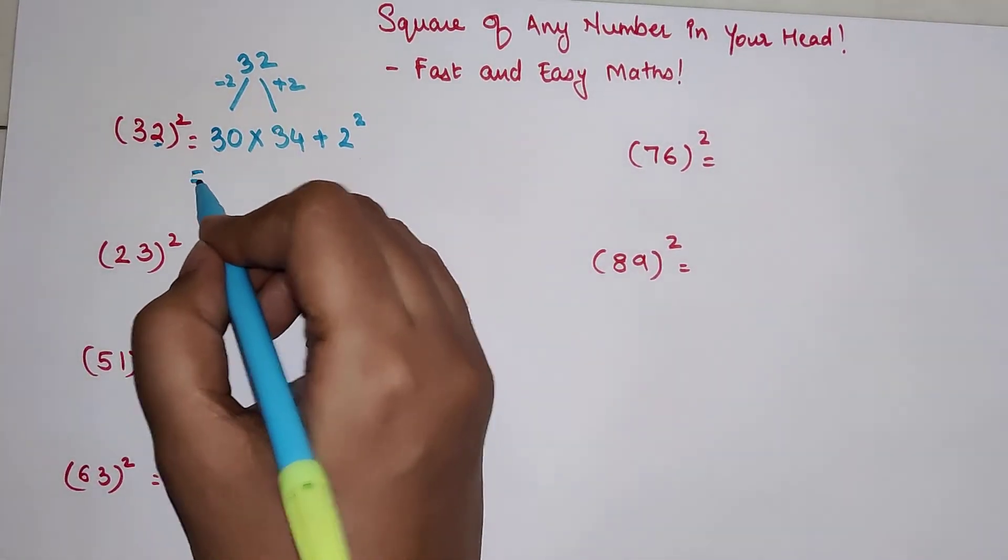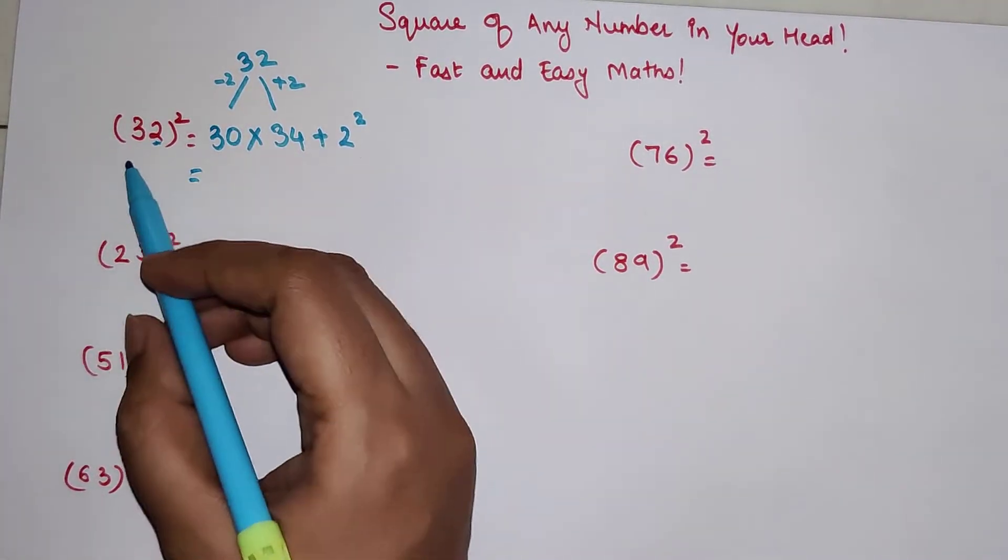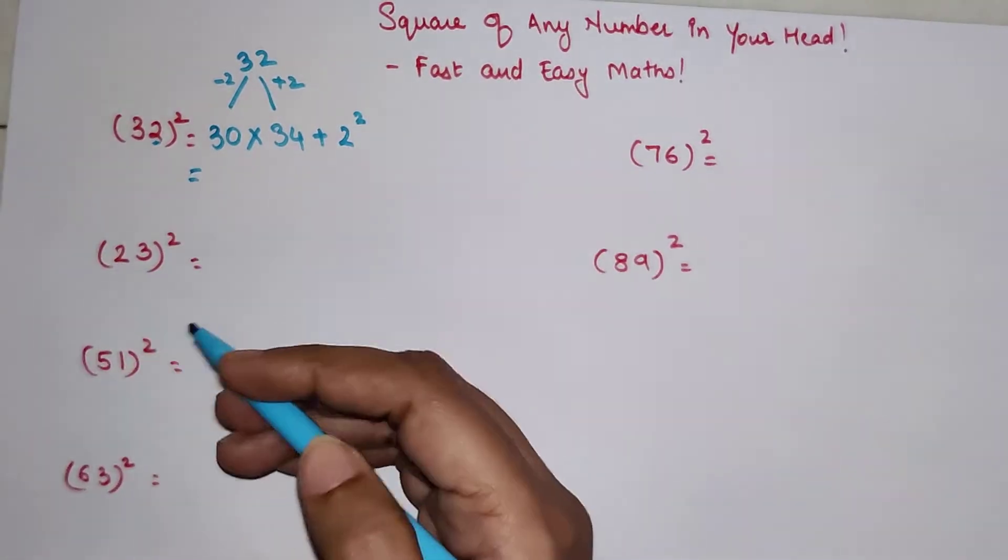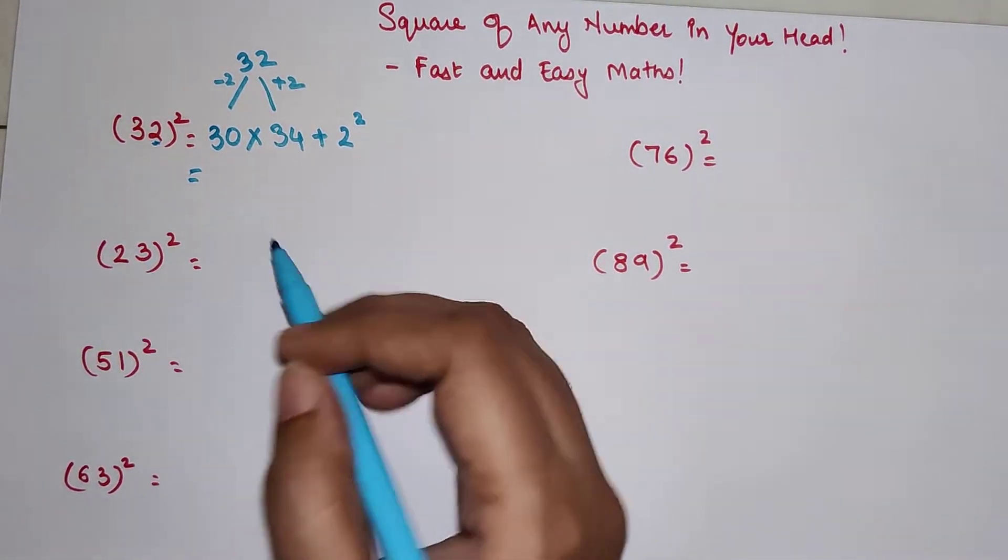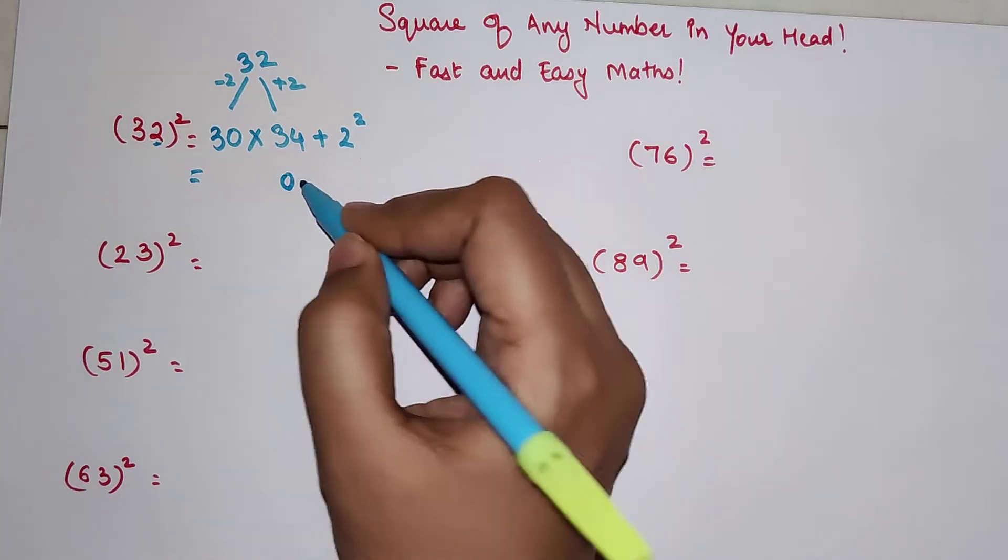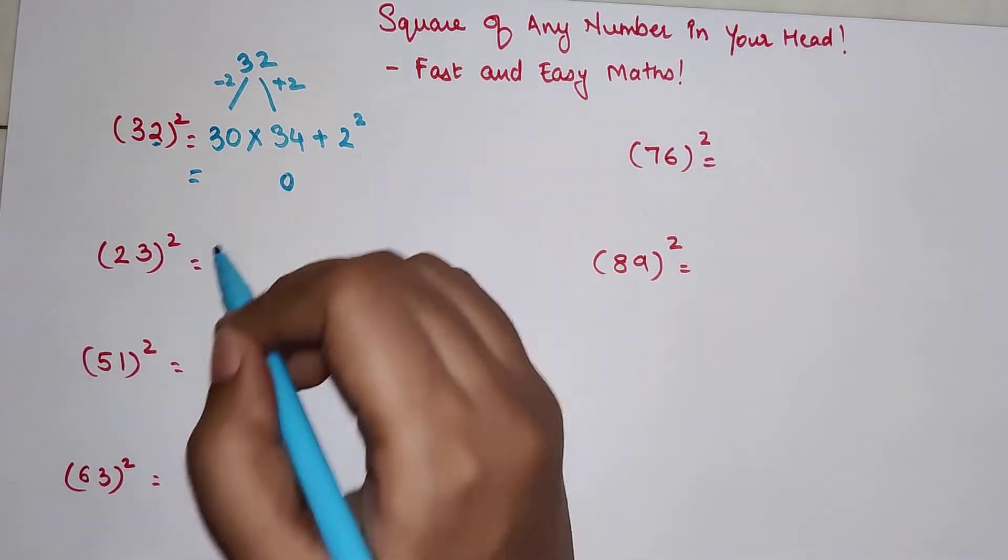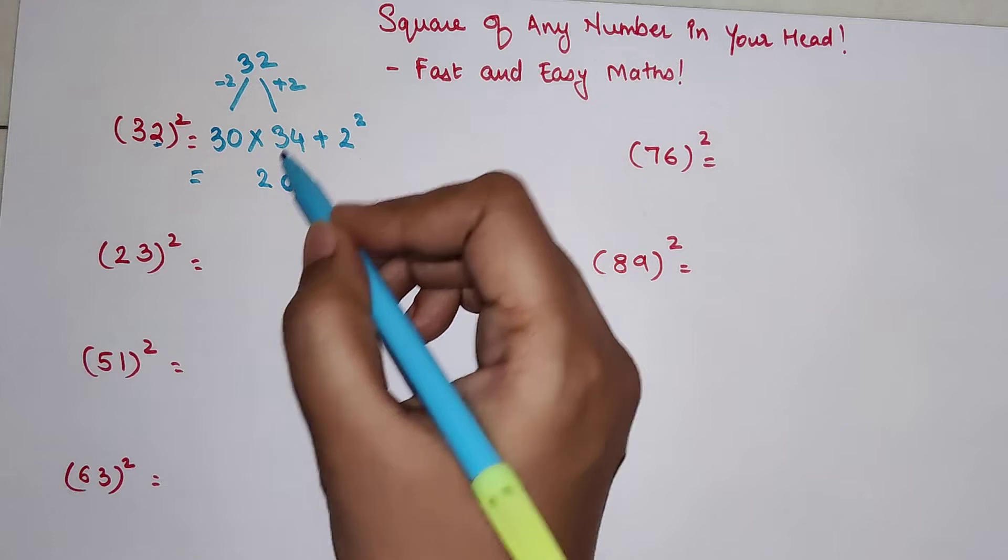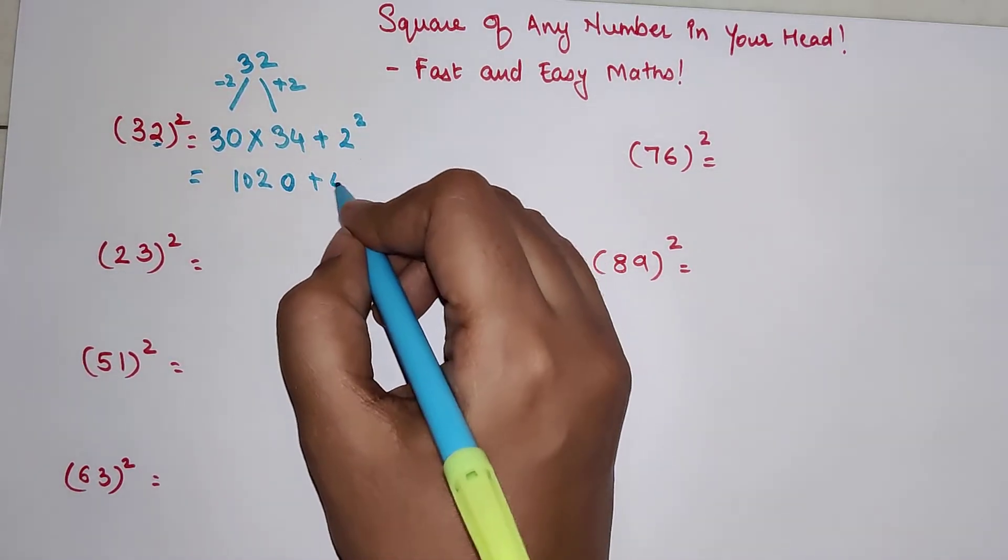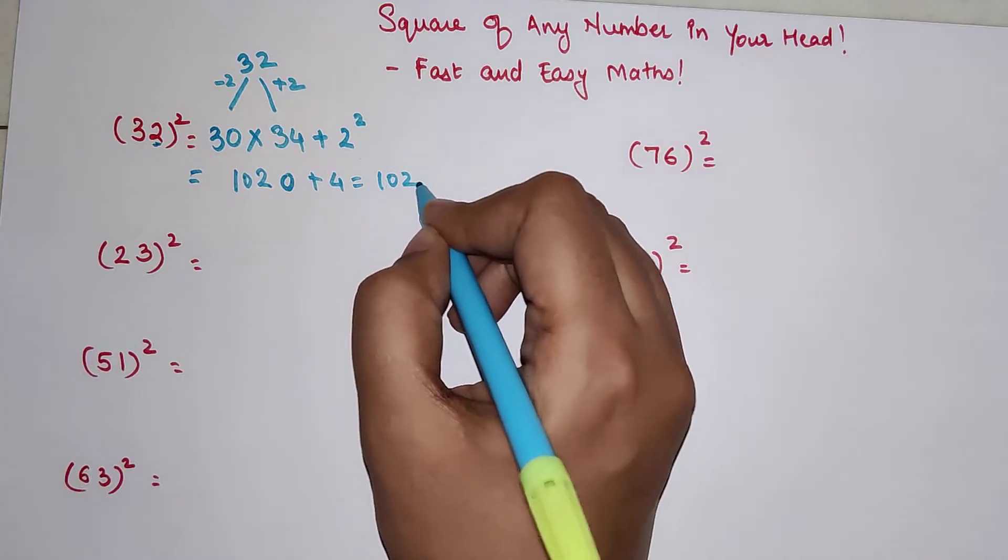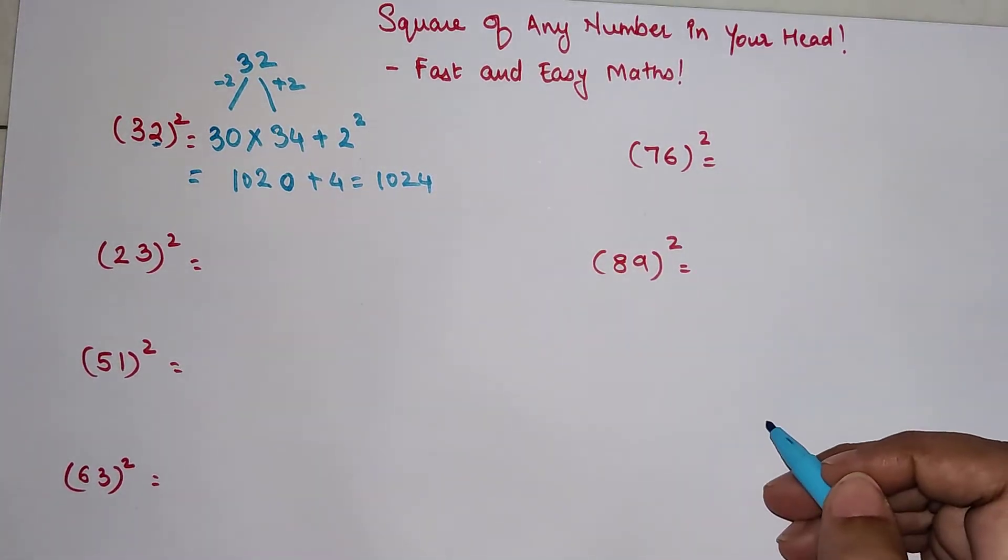Now it's very simple. Multiplying 32 with 32 takes time, but multiplying any number with a tens number is very easy because you can directly write 0. So you're just multiplying 3 with 34. That is 2, 1 carry, 1, 0, 2, 0 plus 2 square is 4, so your answer is 1024.